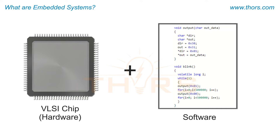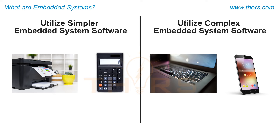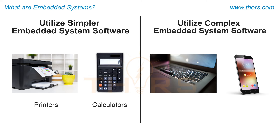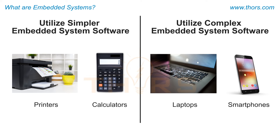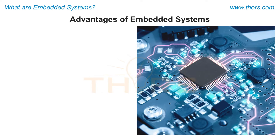The type of software used in an embedded system depends on the type of function it is designed to perform. For instance, devices that perform a specific function, such as printers and calculators, use simpler embedded system software than devices that perform varied functions, such as laptops and smartphones, which use complex embedded system software.